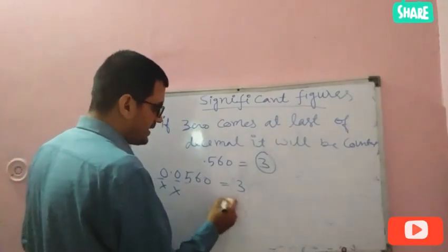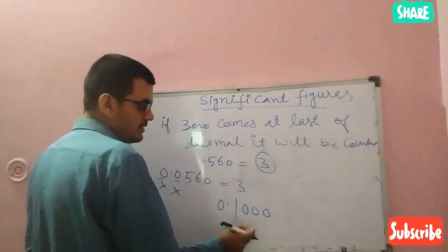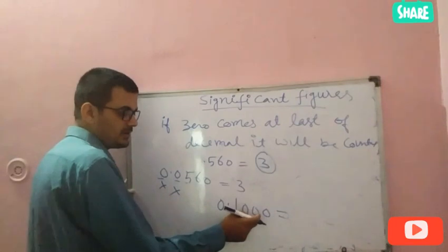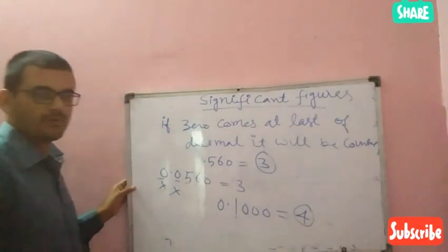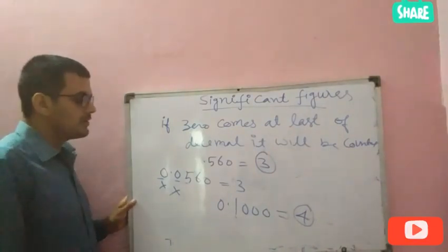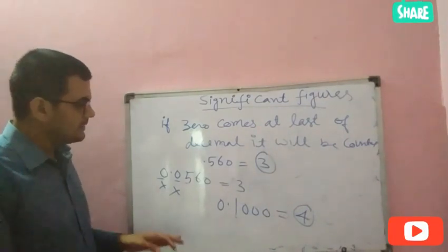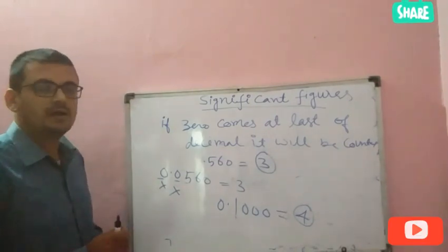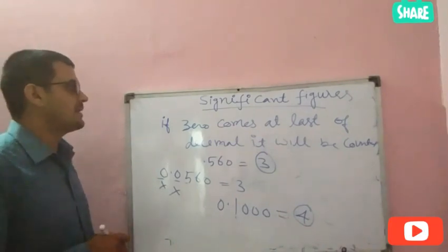If I write 0.1000, significant figure will be four — counting the 1 and all trailing zeros after the decimal. These are all the five or six rules to find out the significant digits of any number.